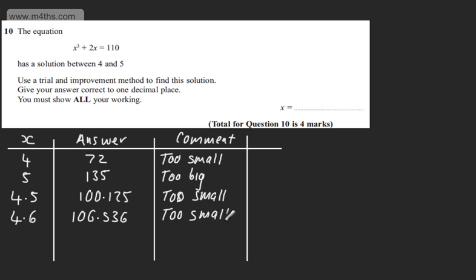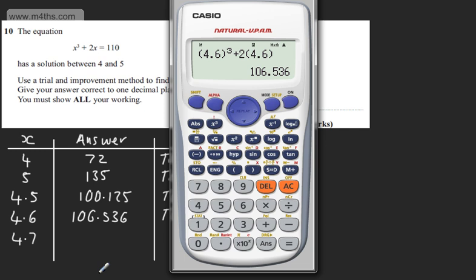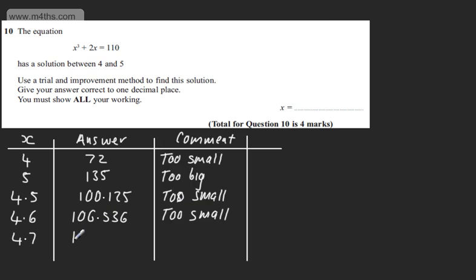The logical thing now is to try 4.7. So if we do 4.7, hopefully this one will be too big. So changing this over, we can see now on here 4.7. That one is going to give us 113.223. So 113.223. And this is too big.